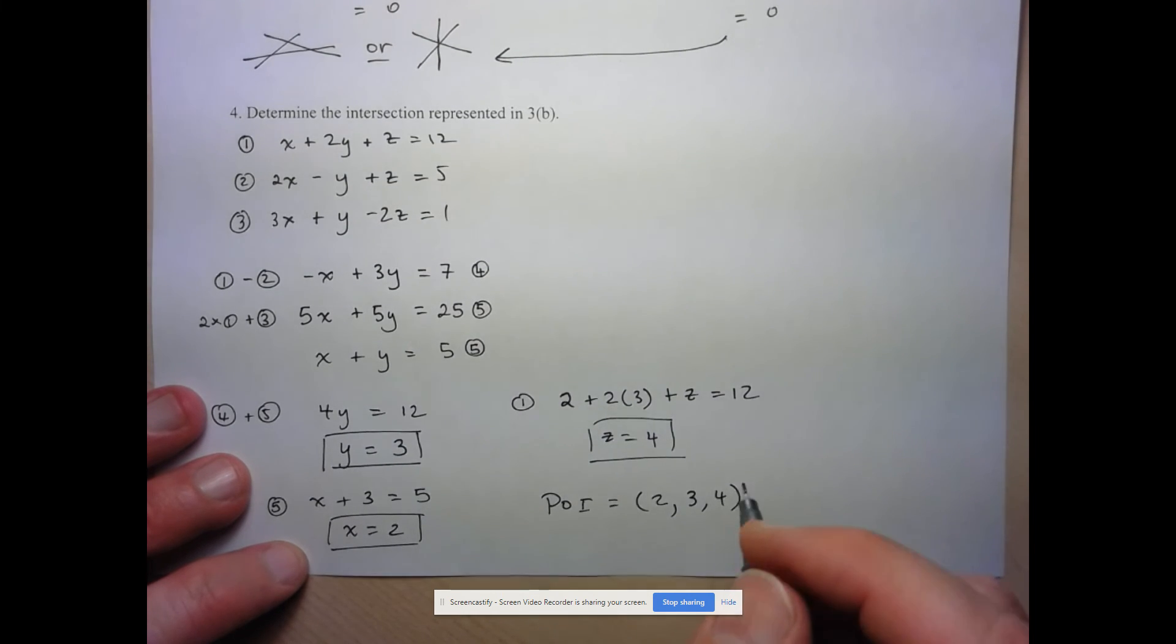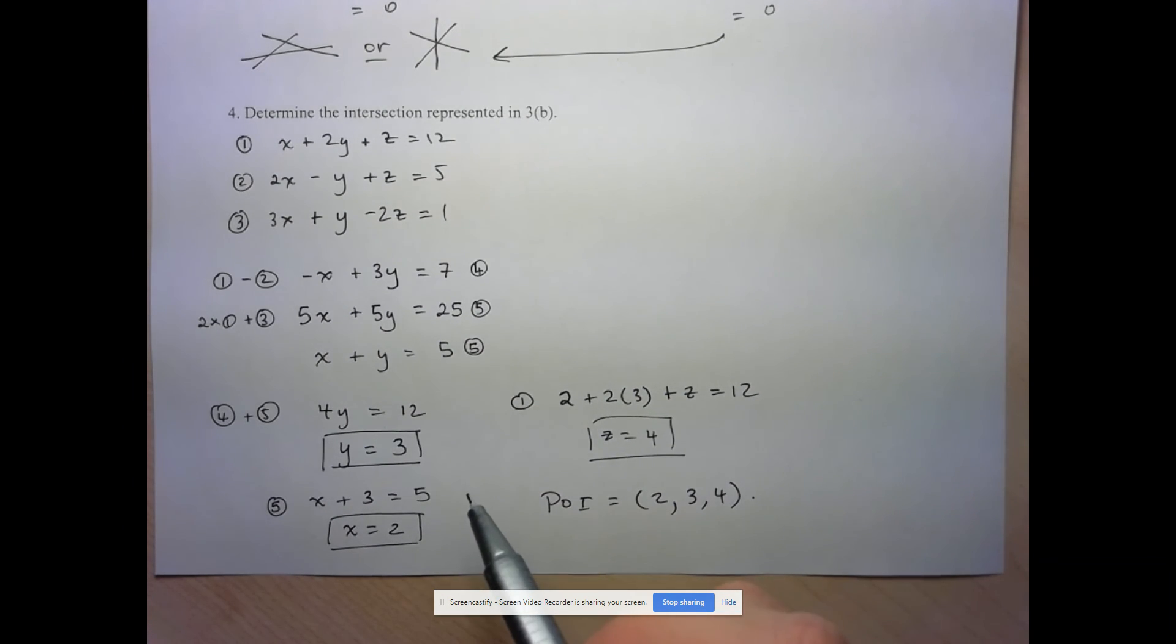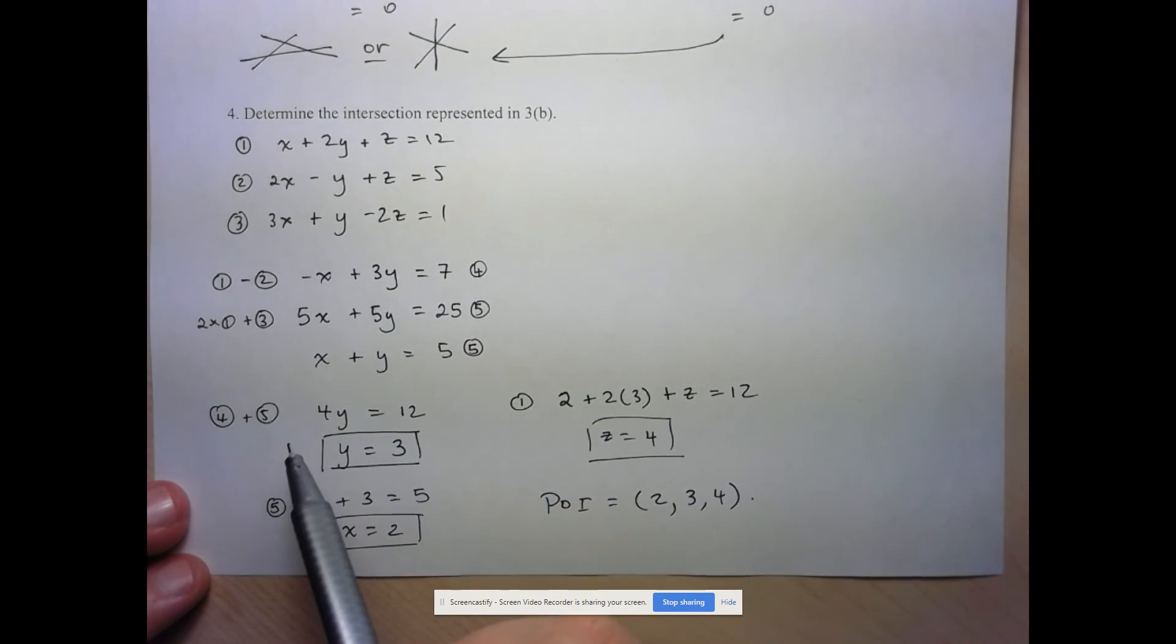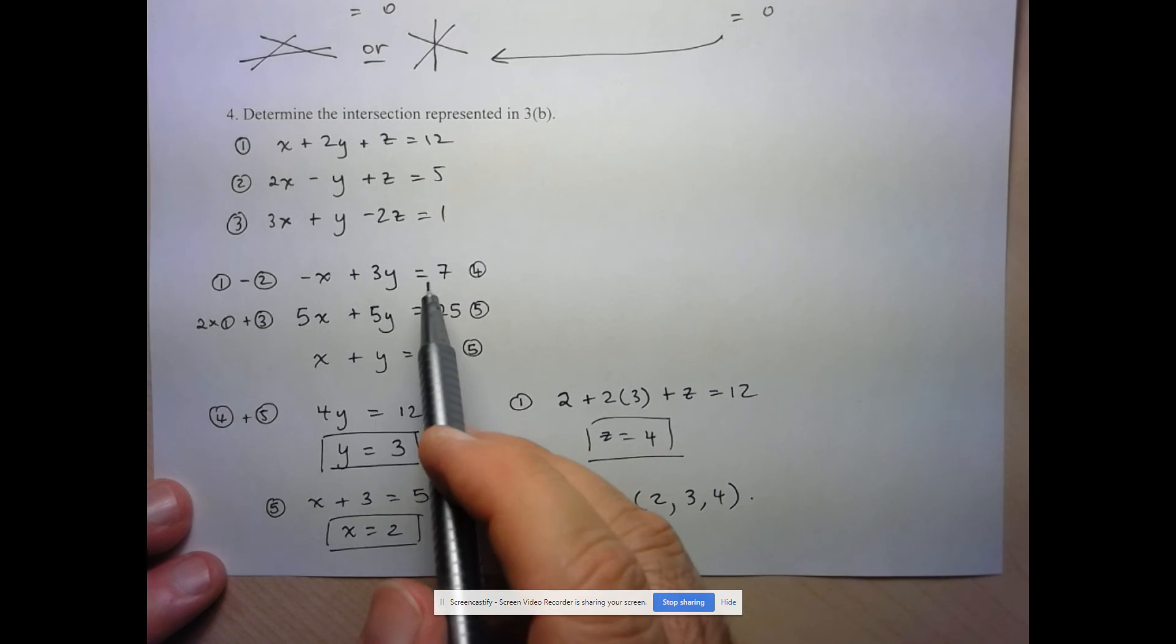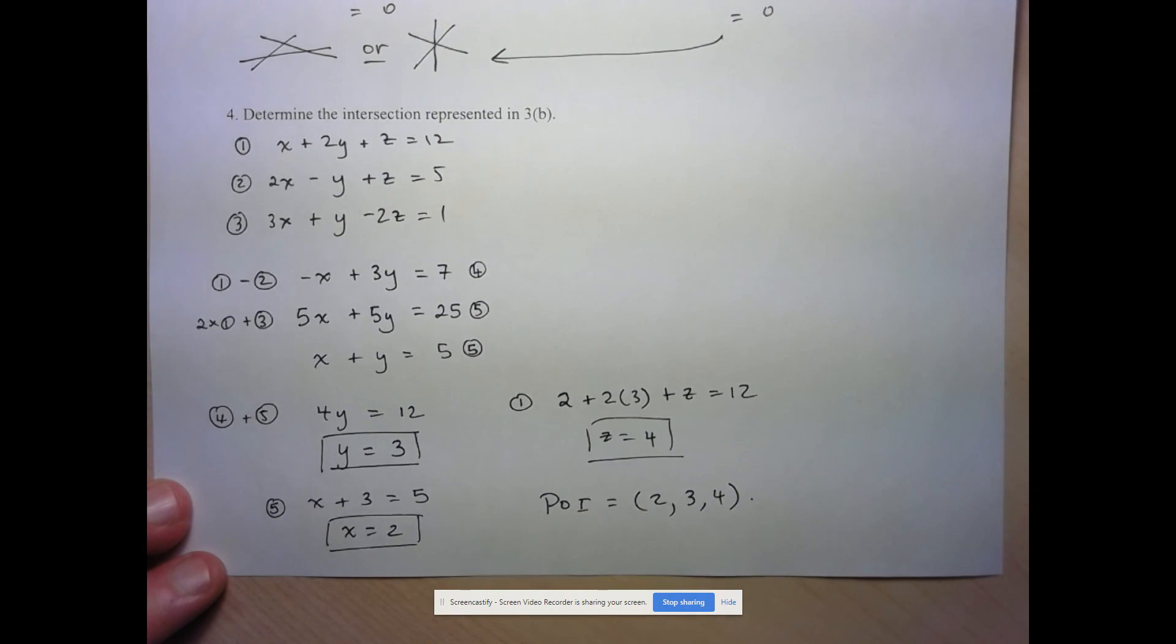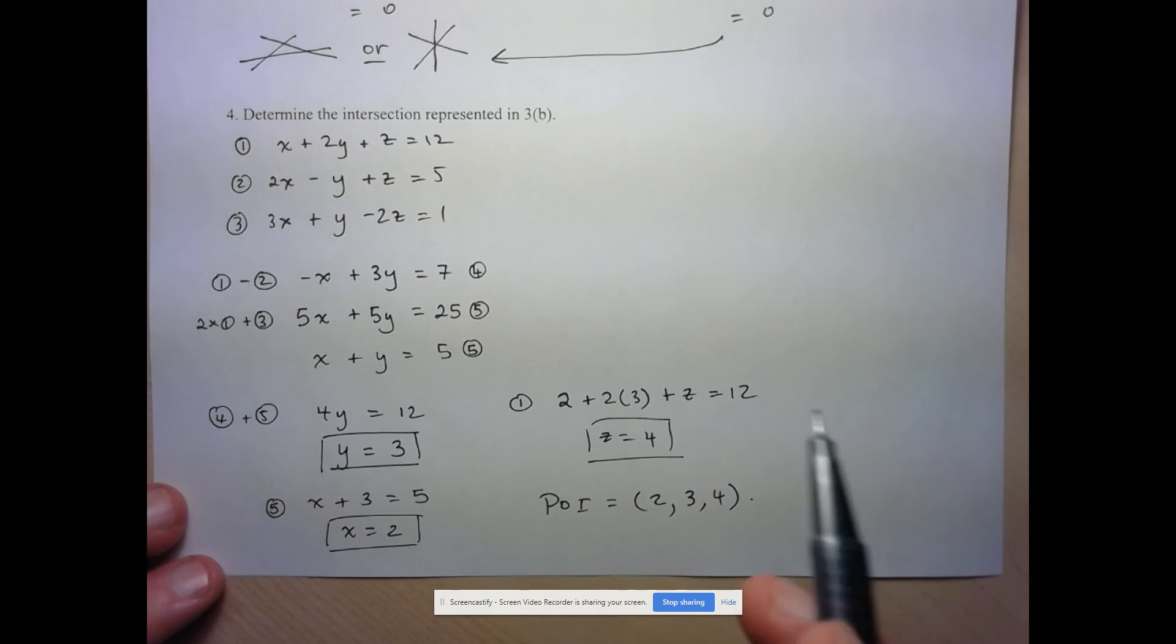So what's nice about what we just saw is that it's just an adaptation of elimination that we know very well. So step 1 is eliminate one variable using two of the equations. The next step is eliminate the same variable but using a different pair of equations. That's going to leave you with two equations and two unknowns, which you can solve. And then once you have those two unknowns, substitute them back into one of these equations to find the third unknown. So that's it for this one.